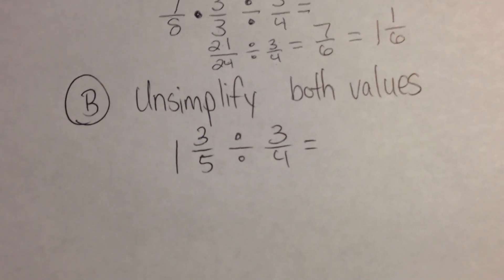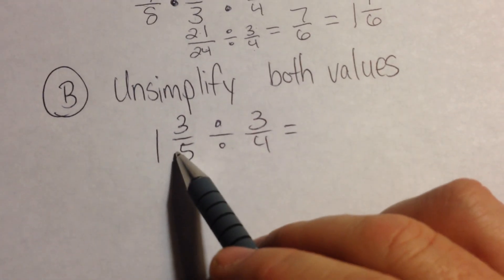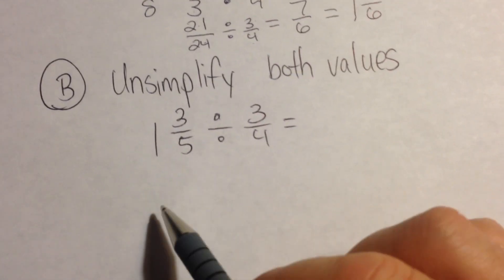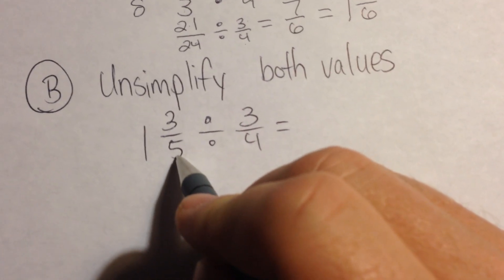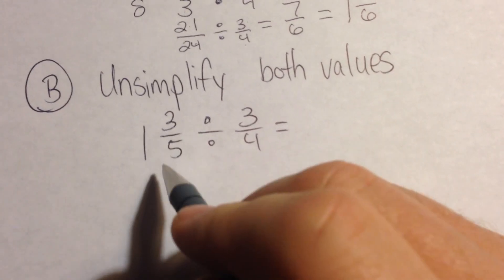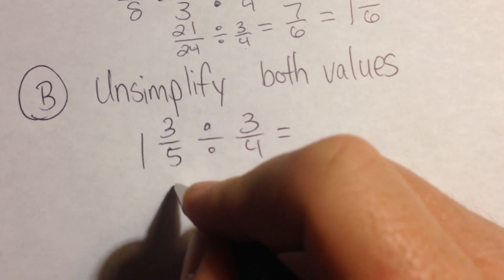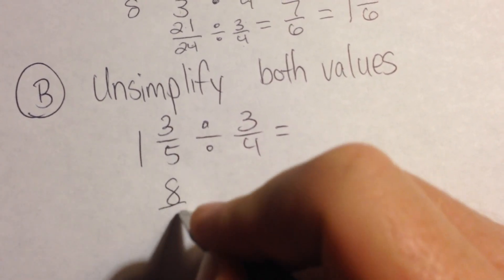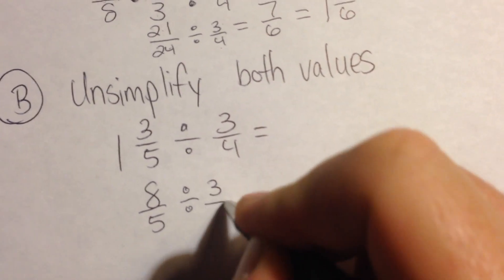Now we can actually also unsimplify with two values. First, we have a mixed number that we'd need to change to improper. So we'll multiply our denominator by 1. 5 times 1 will give us 5, and we'll add our numerator, which is 3. So 5 plus 3 will give us a new improper fraction of 8 fifths. We're going to divide that by 3 fourths.